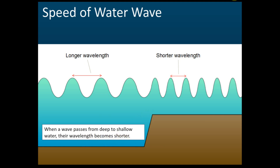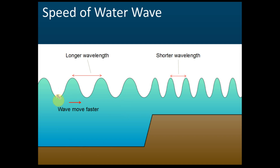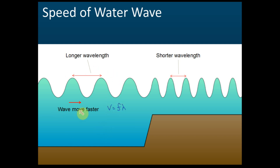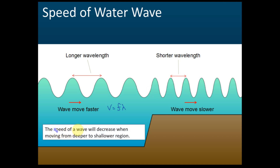The second thing you need to know: at the deeper regions the wavelength is longer. From the equation for the speed of a wave, v equals f times lambda, and lambda is the wavelength. Frequency will remain unchanged, which means if the wavelength is longer then the speed of the wave will be higher — a longer wavelength means the wave moves faster. So at the deeper regions the wave moves faster, and at the shallower regions the wave moves slower.